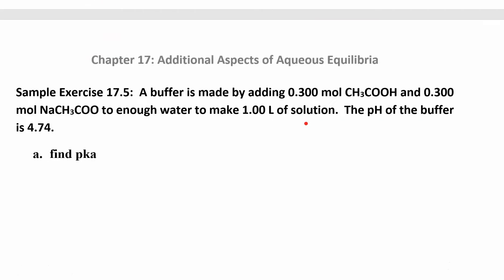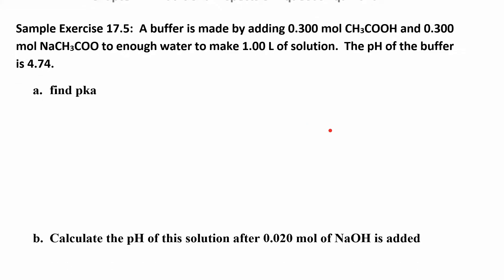It makes more sense when you see it worked out as an example. A buffer is made by adding 0.3 moles of acetic acid and 0.3 moles of sodium acetate. The first thing is to figure out who's the acid and who's the base. This one has a COOH group so it's the acid; the other one has no H so it's the base. That's really important — if you mess that up your numbers will be backwards. They give you the pH of the buffer and ask you to find the pKa.